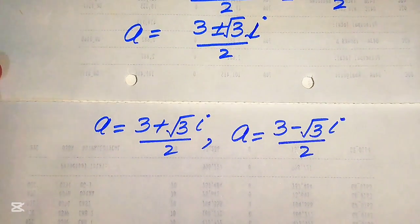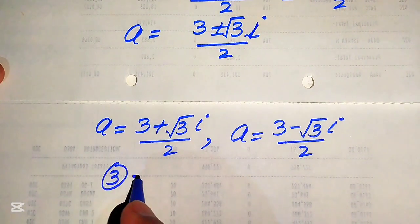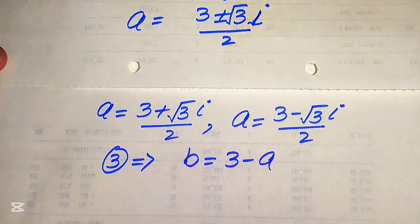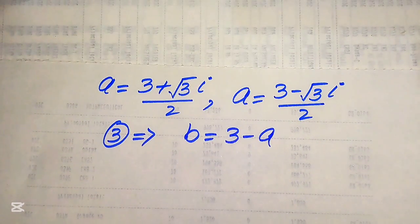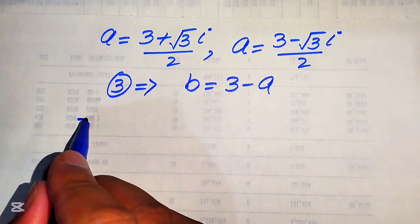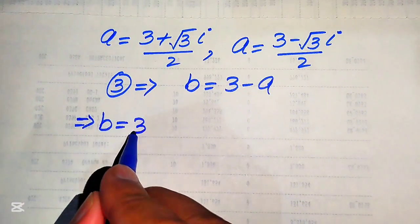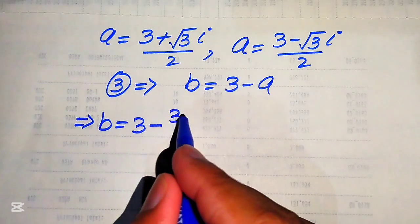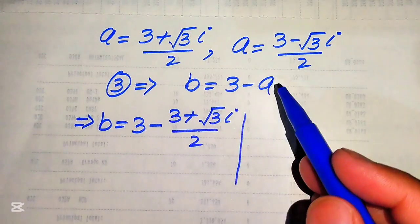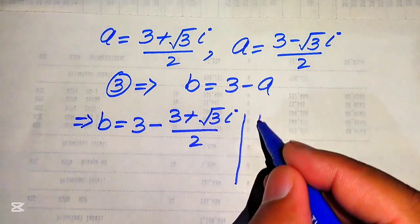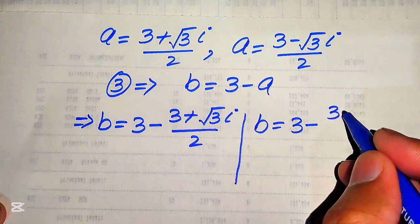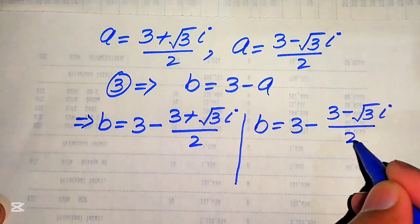Now we use equation number 3, which states B equals 3 minus A, to find the corresponding values of B for each value of A. For the first case, B equals 3 minus the quantity 3 plus square root of 3 times iota divided by 2. For the second case, B equals 3 minus the quantity 3 minus square root of 3 times iota divided by 2.